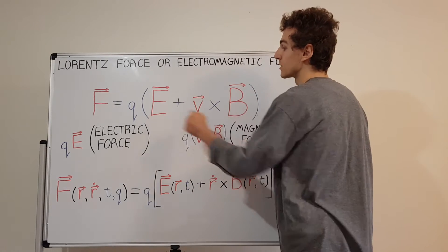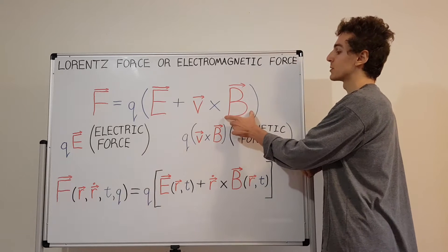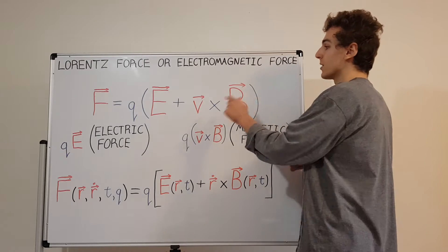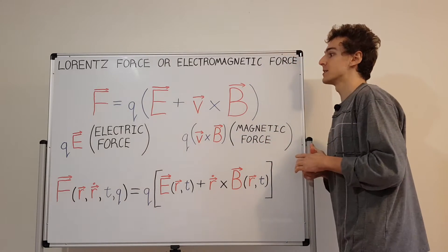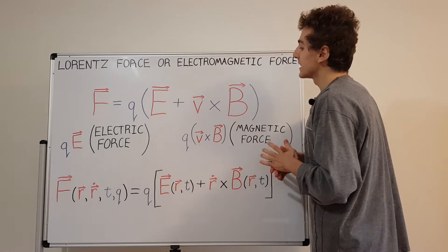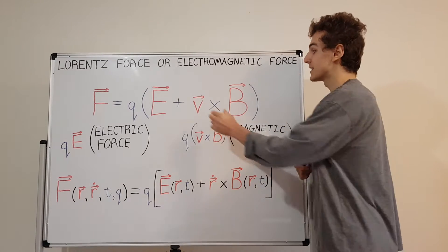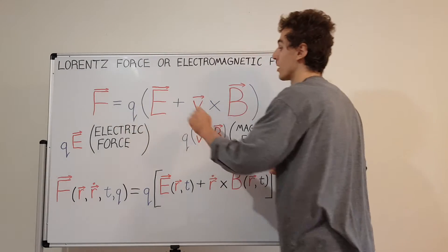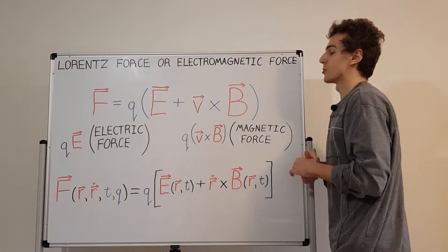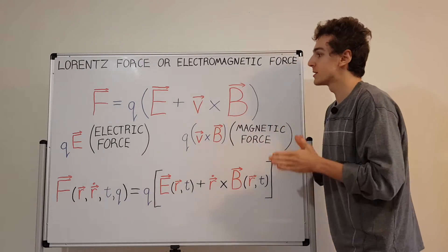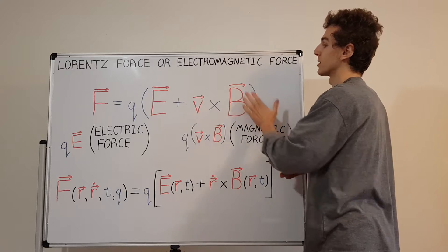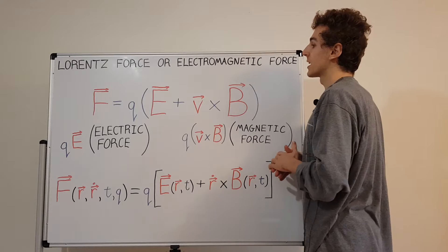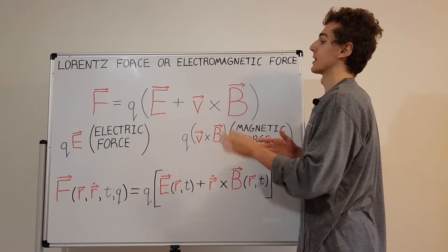The electric field is represented by E and the magnetic field is represented by B. Another interesting thing is the force a particle experiences from electromagnetic fields is actually dependent on its velocity. The velocity tells you the magnitude of the force as well — it's one of the things the force depends on. How fast you're going actually influences how you interact specifically with the magnetic field. The electric field doesn't care about how fast you're going; it just cares about where you are and at what time you are at that location.